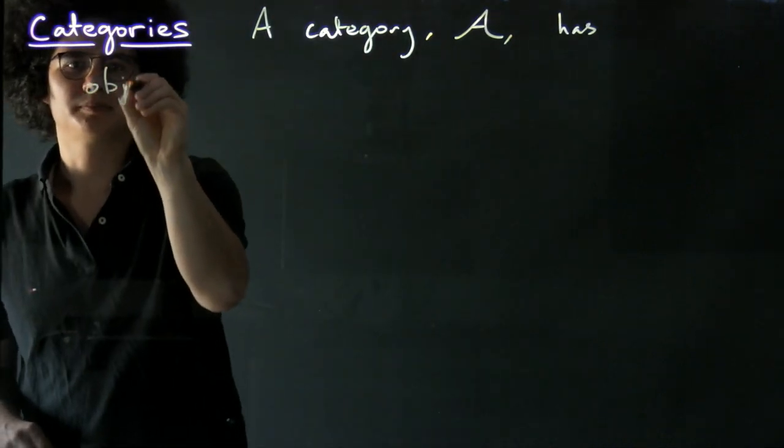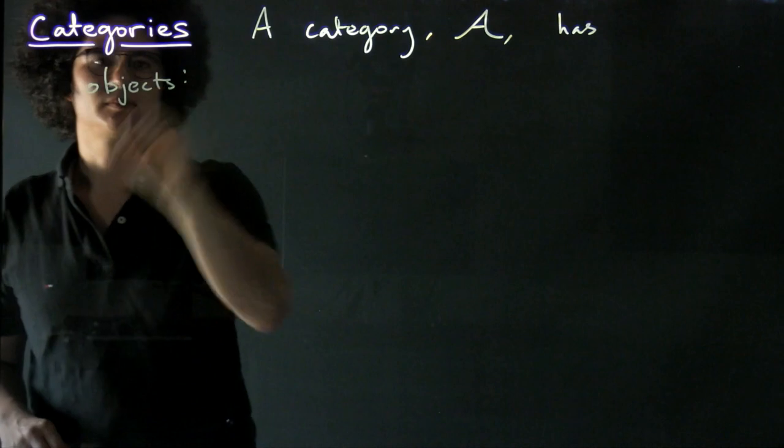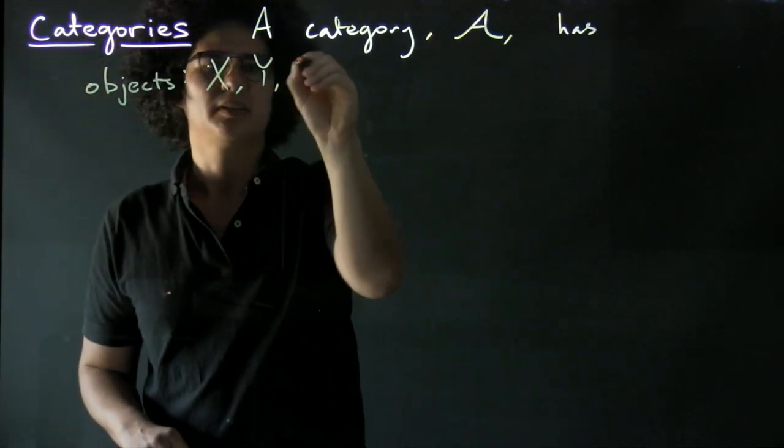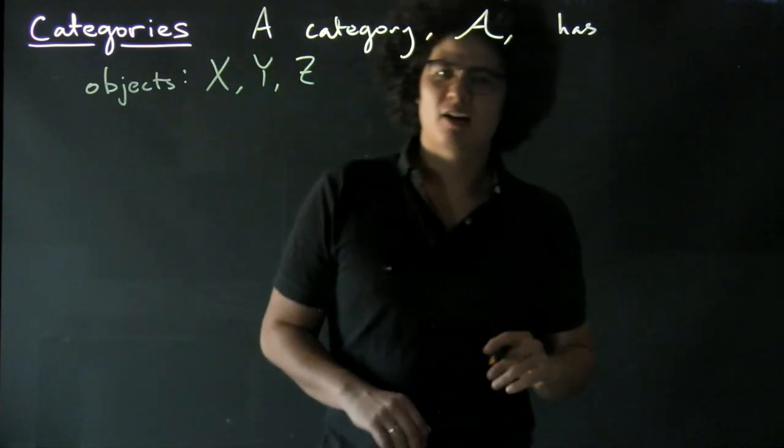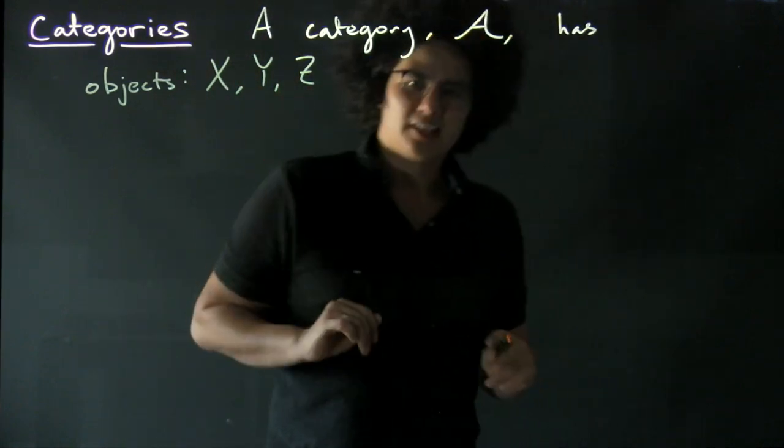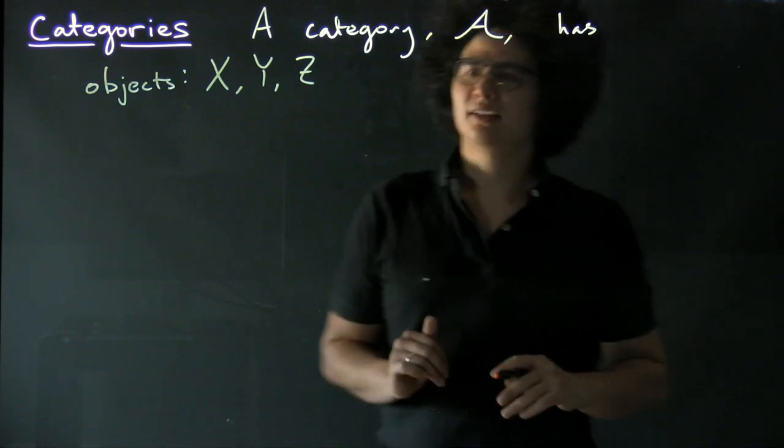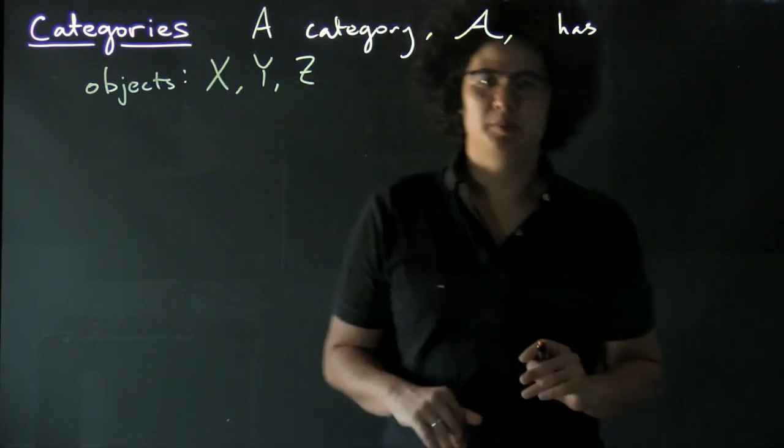Objects are often denoted by capital letters. Now note that I said a collection of objects, not a set of objects. It's very often the case that the collection of objects in a category forms a proper class.